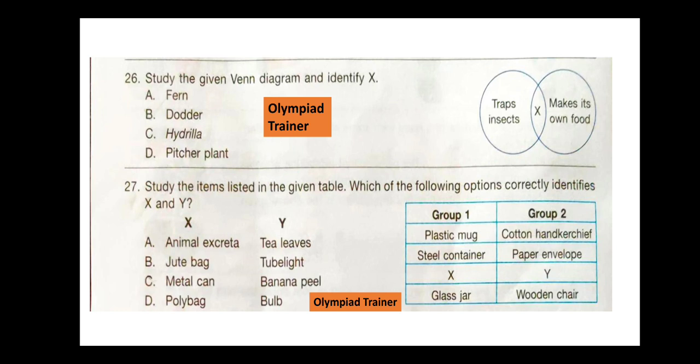Question 27. Study the items listed in the given table. In group 1: plastic mug, steel container, glass jar, and X. In group 2: cotton handkerchief, paper envelope, Y, and wooden chair. The correct answer is option C — X can be a metal can and Y can be a banana peel. Group 2 consists of things made from plants or trees, and group 1 consists of all man-made things.